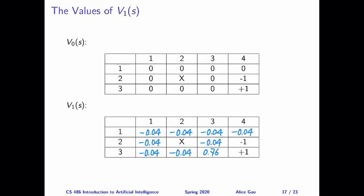You can intuitively interpret these value updates as follows: if we are calculating the estimates for iteration i, only the states that can reach the plus one state in i steps or fewer will have a positive estimate of the V value. Because if a state cannot reach the plus one state within i steps, it will only accumulate negative reward. For V sub 1, only S3,3 can get to the plus one state in one step — that's why it's the only state with a positive estimate. Every other state has a negative estimate, because the best you can do is get zero and take one step, which costs a little bit.